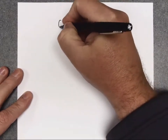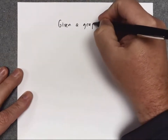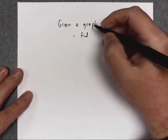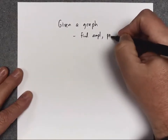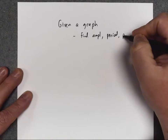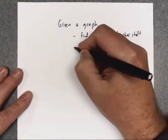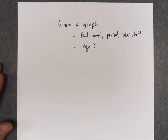We're continuing to look at trig graphs, but now we want to talk about some problems where we're given a graph and then asked to find the amplitude, the period, and the phase shift, and then write the equation for that trig graph.